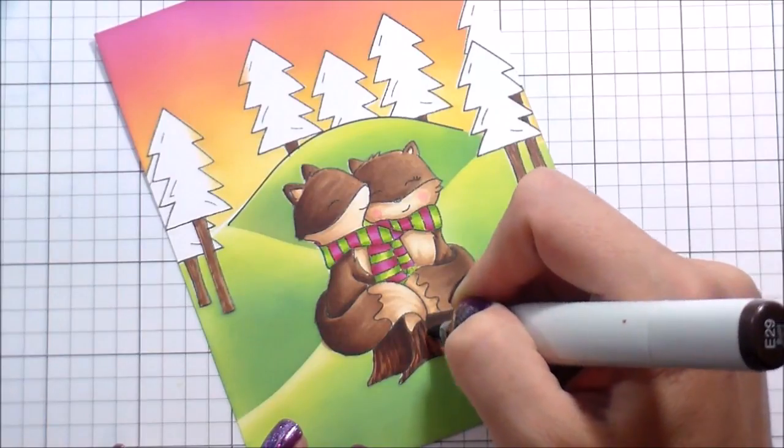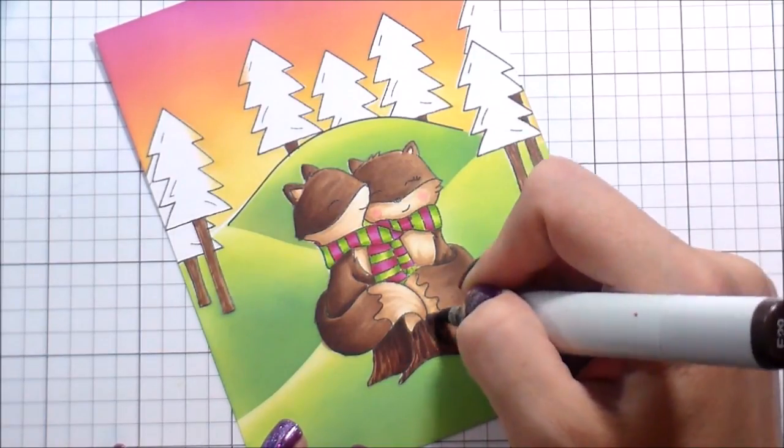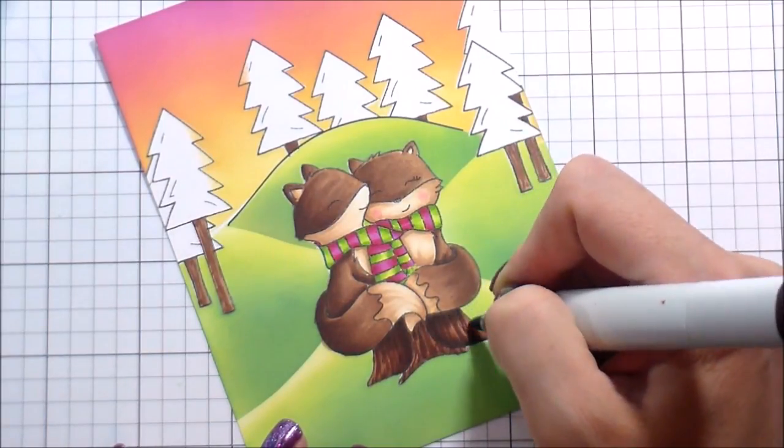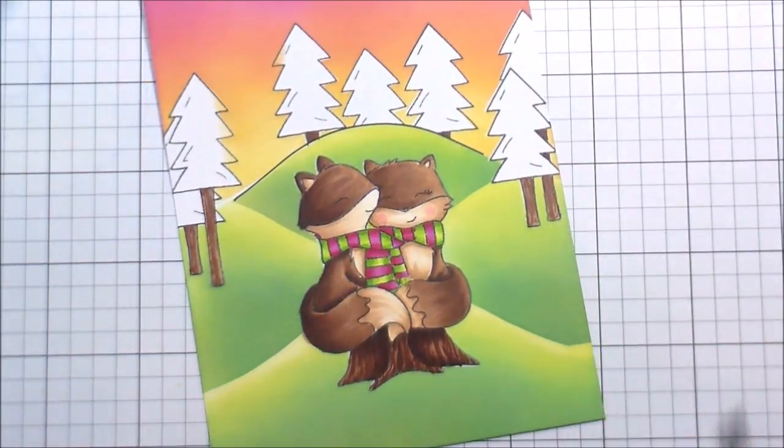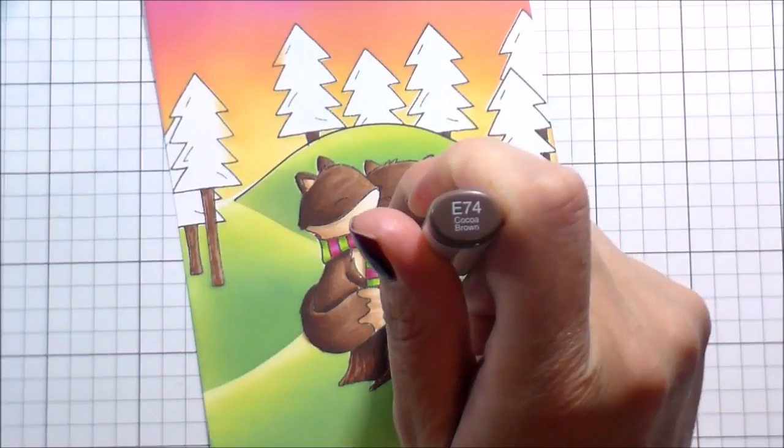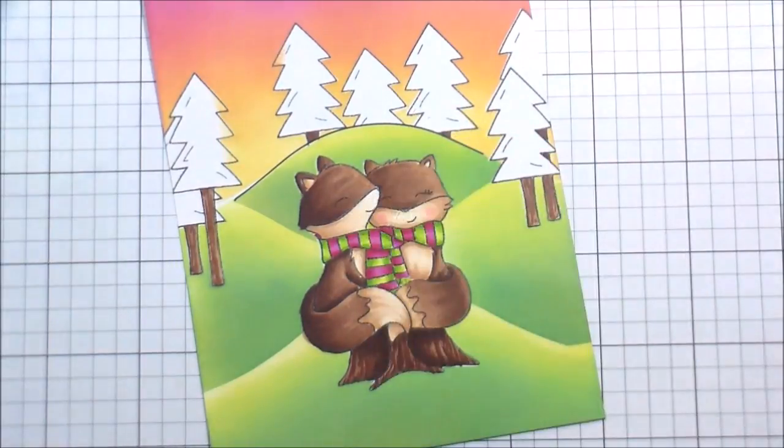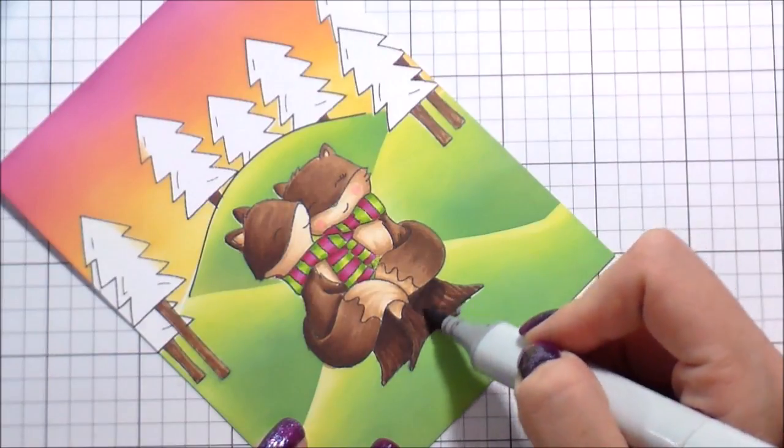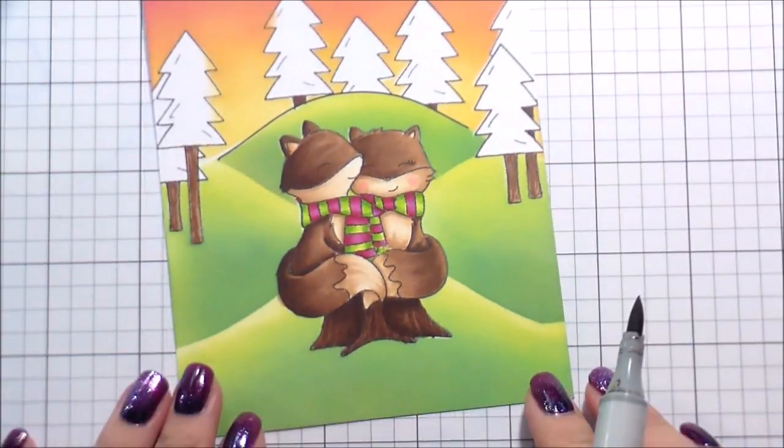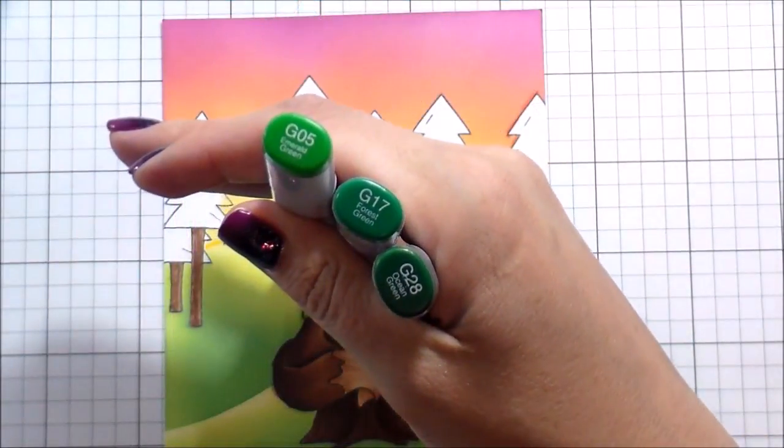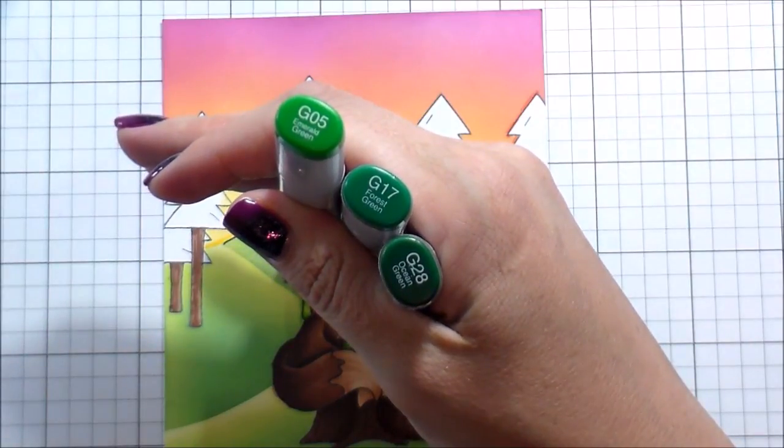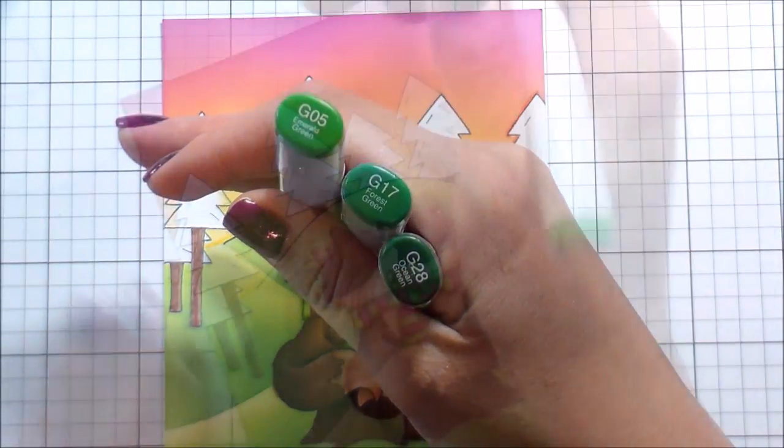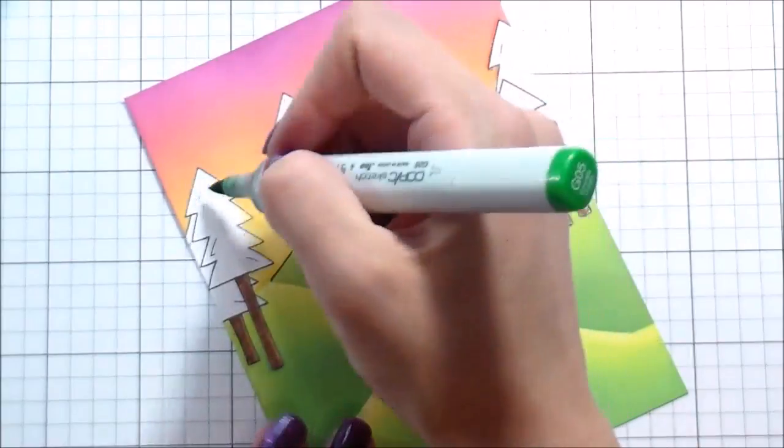And I'm just going to do little lines. I'm kind of going up and down. Sometimes I'm adding a little swirl, just to create that wood texture. In order to change the color just enough that it doesn't look like we colored everything with the same color, I picked an E74, which is a much cooler brown. It's much more ashy. And by putting that over top of it, it really tones down the warm tones, the red tones.